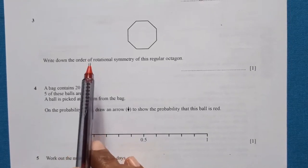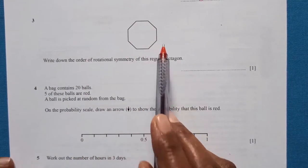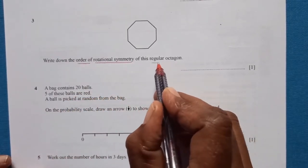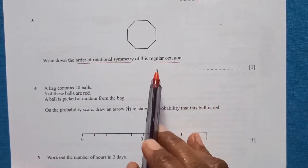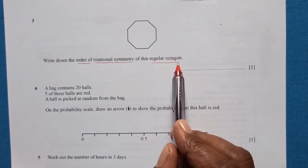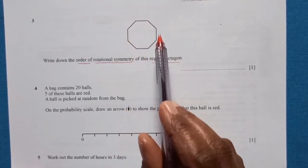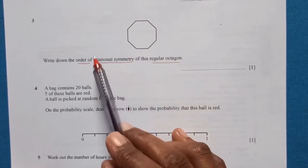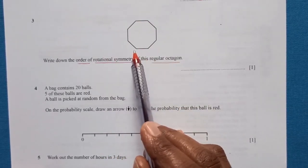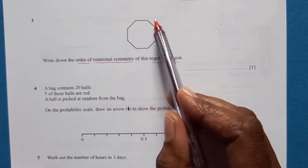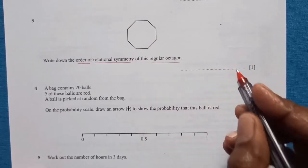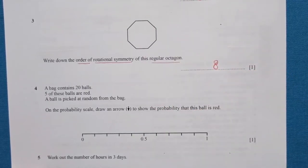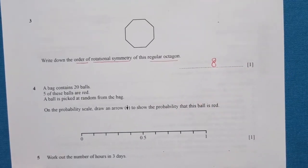Question 3: you can see this shape here. Write down the order of rotational symmetry of this regular octagon. Because this is a regular octagon, all the sides are the same. It has eight sides. If you rotate it up to 360 degrees, you will get the same shape eight times, because there are eight identical sides. So the rotational symmetry is 8.